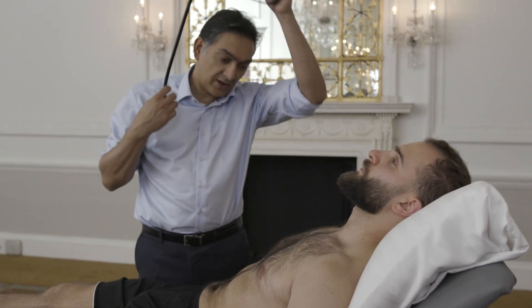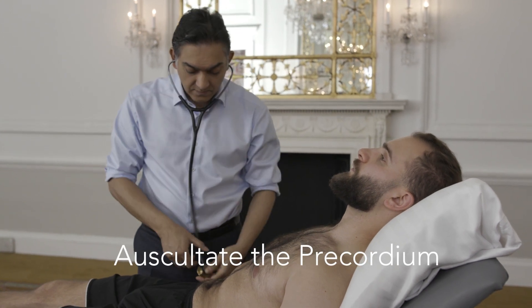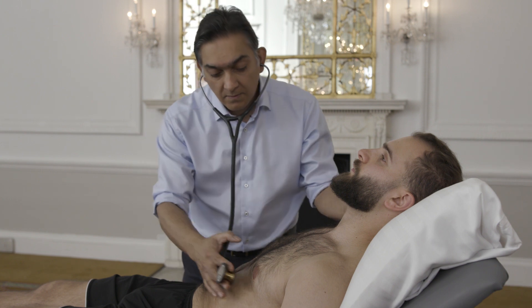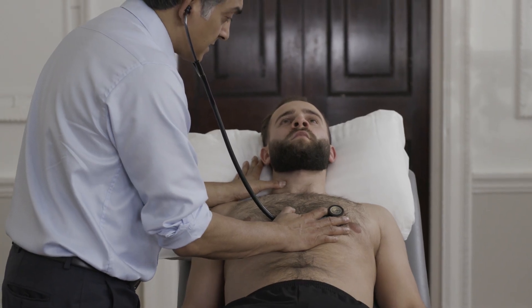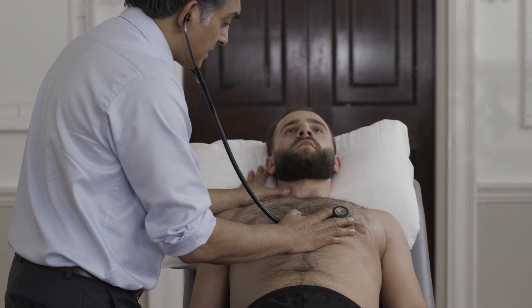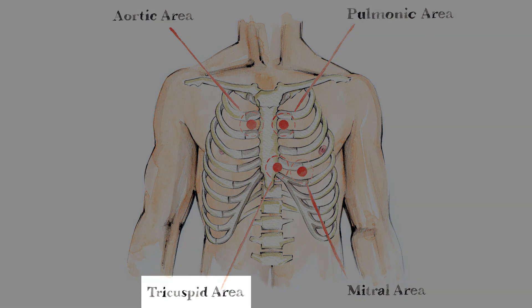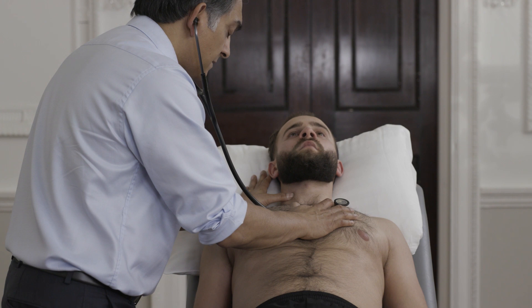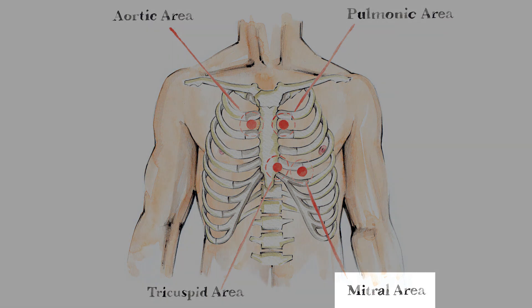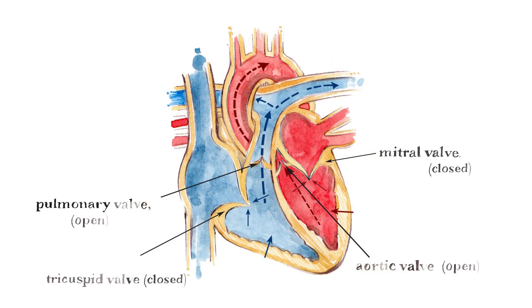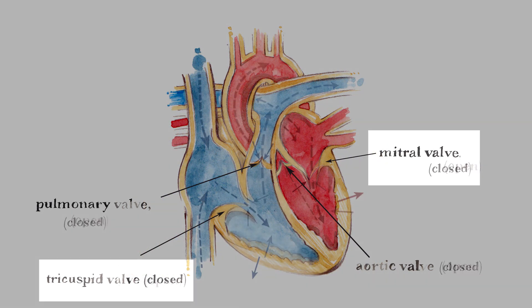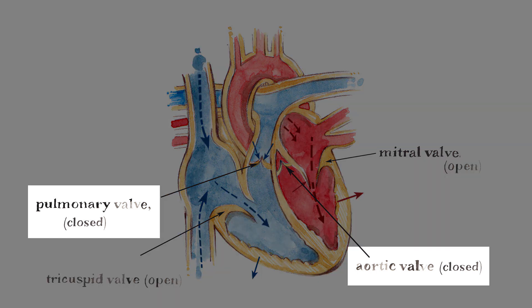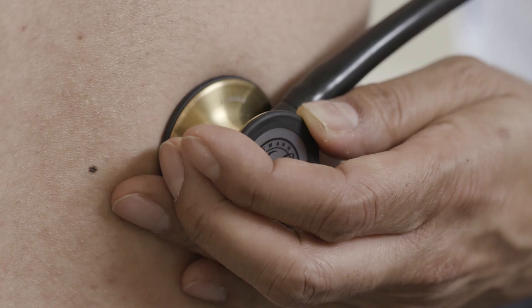Listen over the tricuspid, pulmonary and aortic areas with the diaphragm of the stethoscope, and over the mitral area with the bell of the stethoscope. The first heart sound reflects the closure of the mitral and tricuspid valves; the second heart sound reflects the closure of the aortic and pulmonary valves. Determine the site, timing, character and pitch of any murmurs and the presence of additional heart sounds.